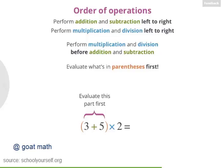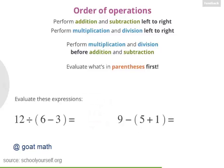In math, parentheses are a way to skip to the front of the order of operations. They mean: do this part first. So to evaluate this expression, you'd add 3 and 5 first, because they're in the parentheses, to get 8. Then multiplying by 2 gives you 16. Next, try evaluating these expressions: 12 divided by (6 minus 3), and 9 minus (5 plus 1).